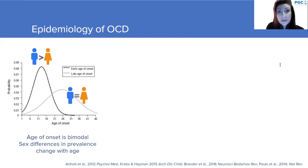In terms of the epidemiology of OCD, when we look at age of onset there seem to be two peaks in the distribution: one in childhood and the other in early adulthood. Among children with OCD, two-thirds of cases tend to be boys, but the prevalence rates between males and females are about equal in adulthood.